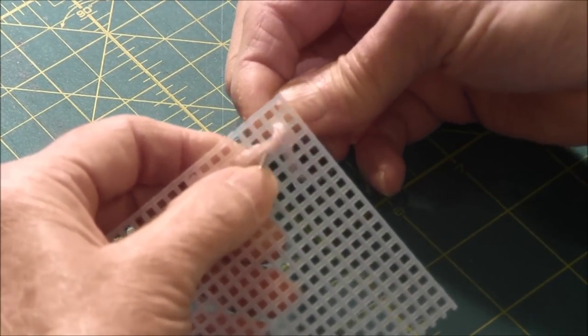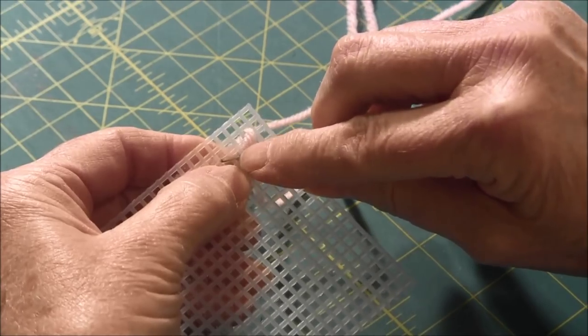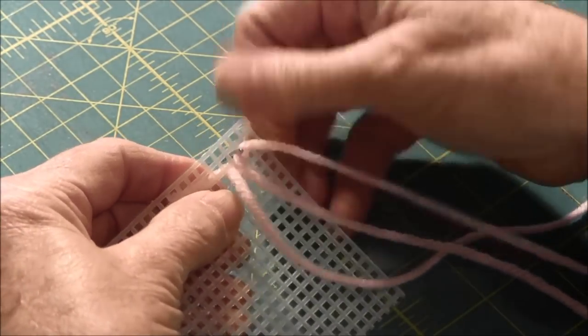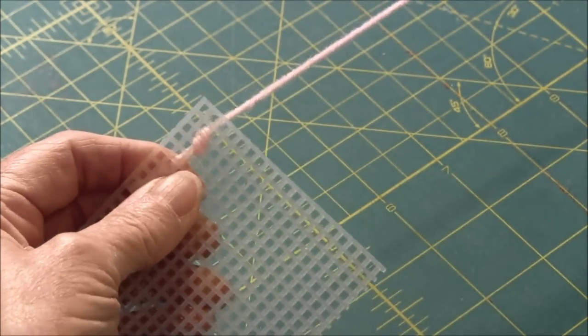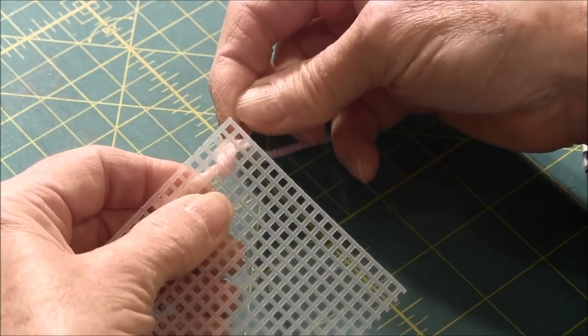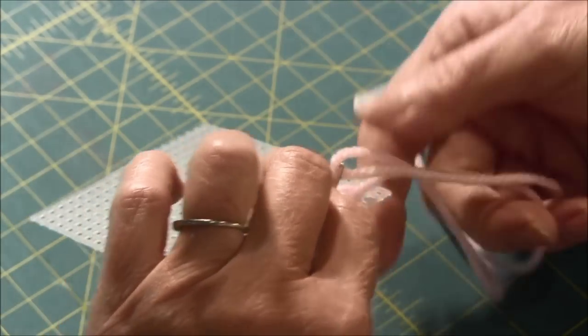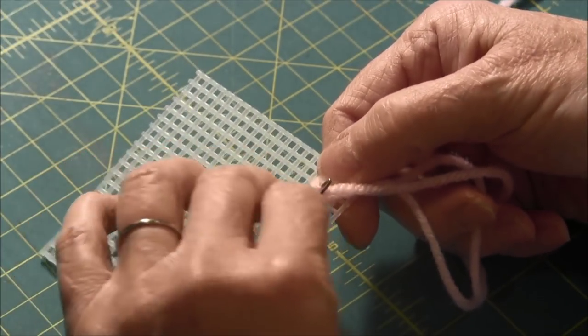The next stitch would be right next to the bottom row and again diagonally. Now as you can see I'm working over the yarn on the back.